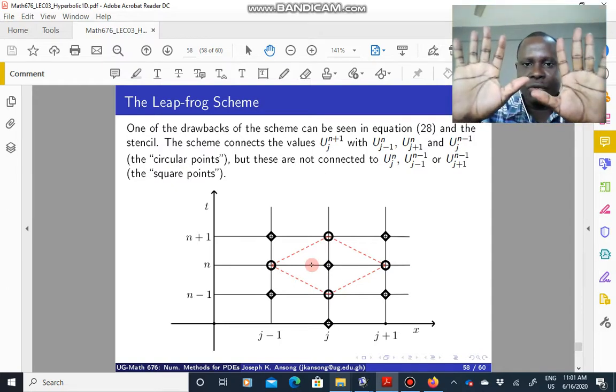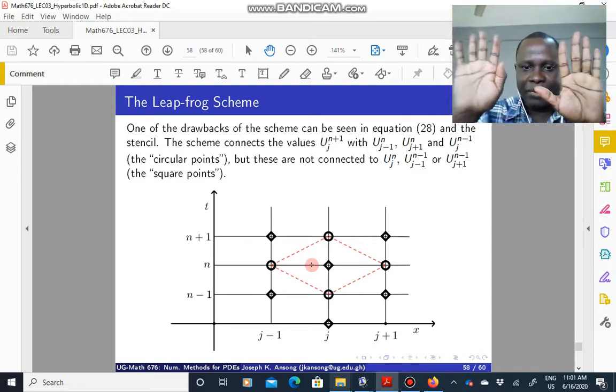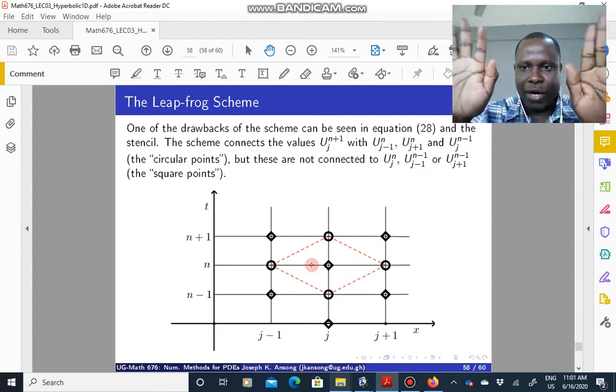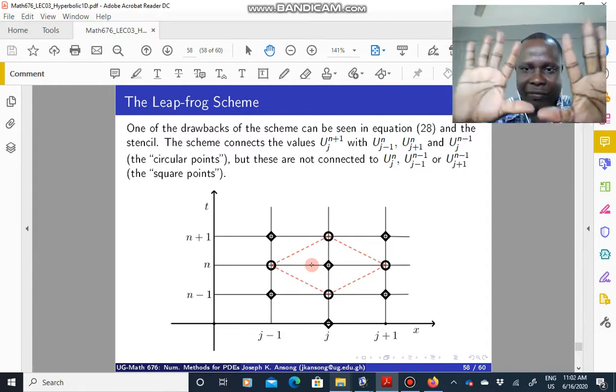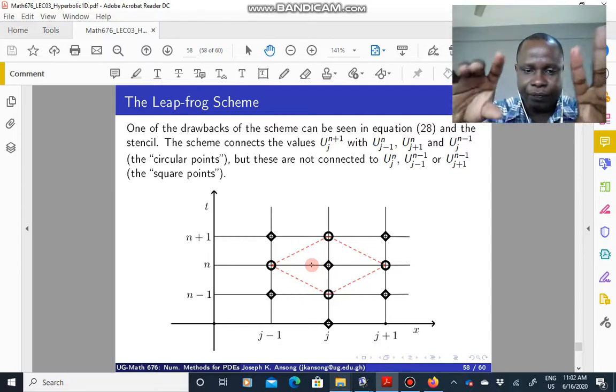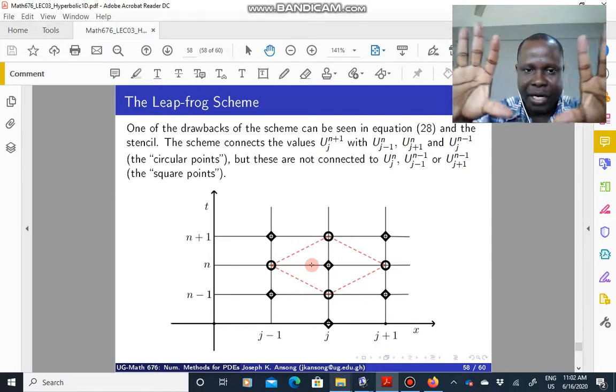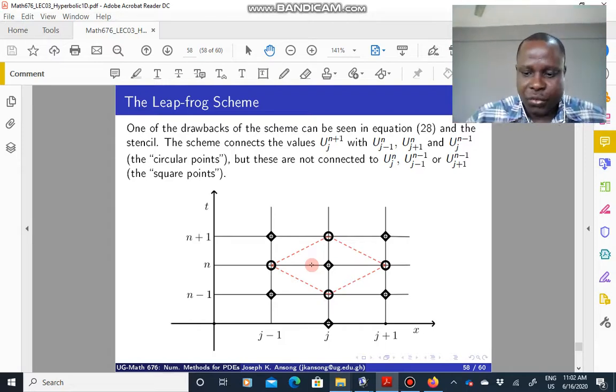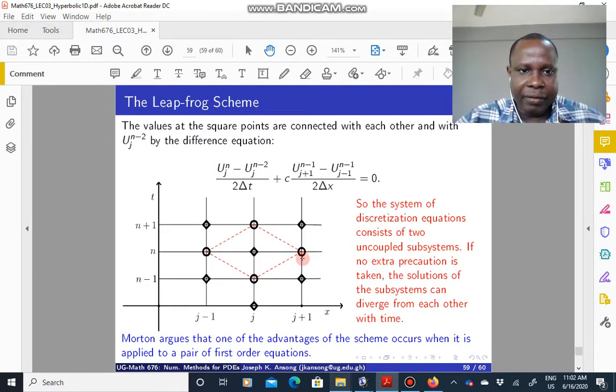And so you have like two subsystems, the circular ones and the square ones that are being solved independently. So if you are not careful and the solutions don't match up, you can have problems. So that is one of the challenges of the leapfrog scheme.